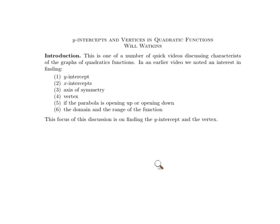This is the next in a series of videos looking at the graphs of parabolas resulting from quadratic functions. In a previous video we noticed there were going to be six characteristics that we would hope to discover. In this video we'll look at the y-intercept and the vertex.